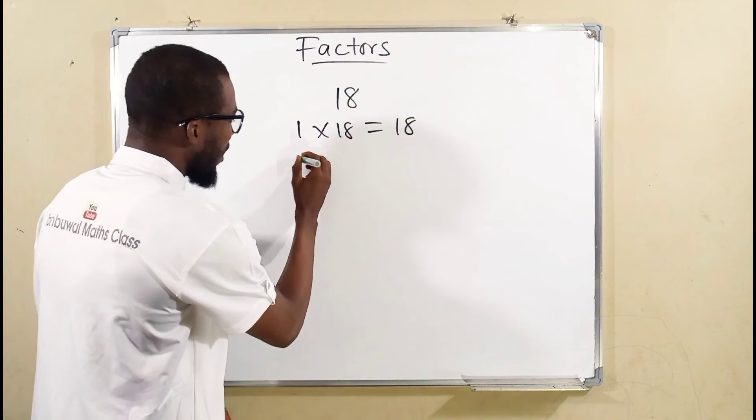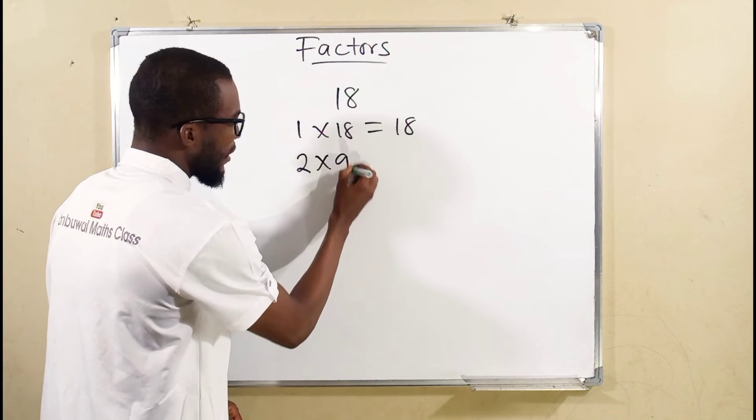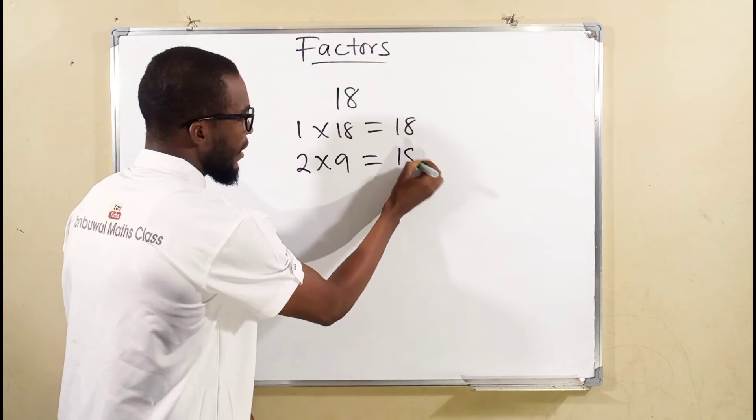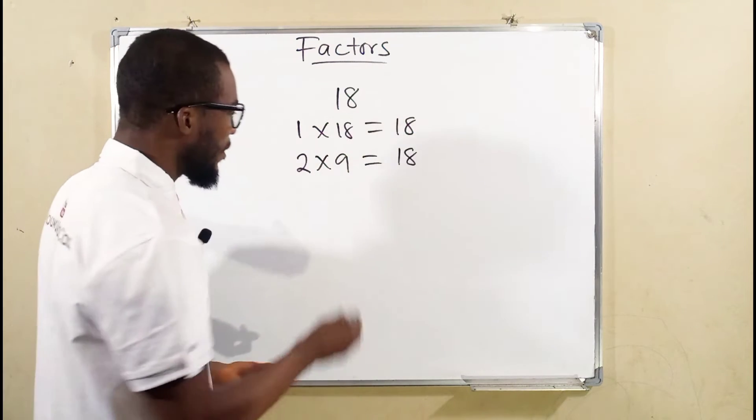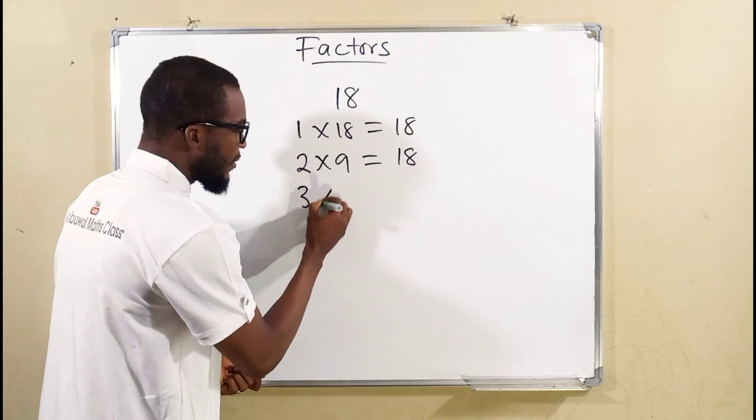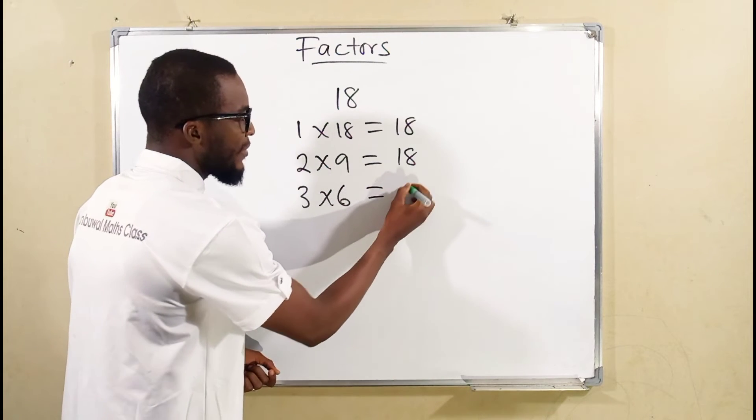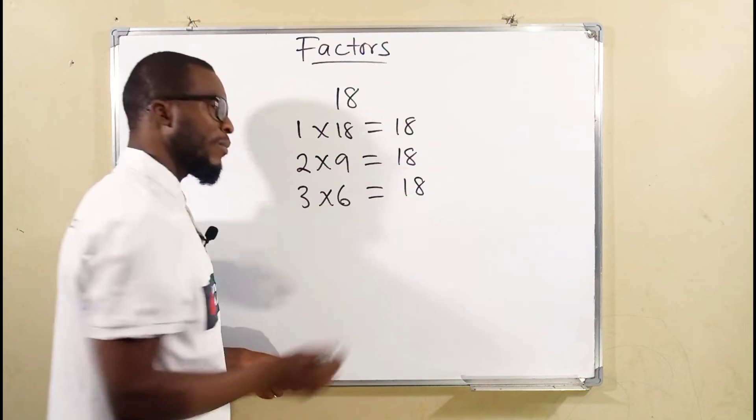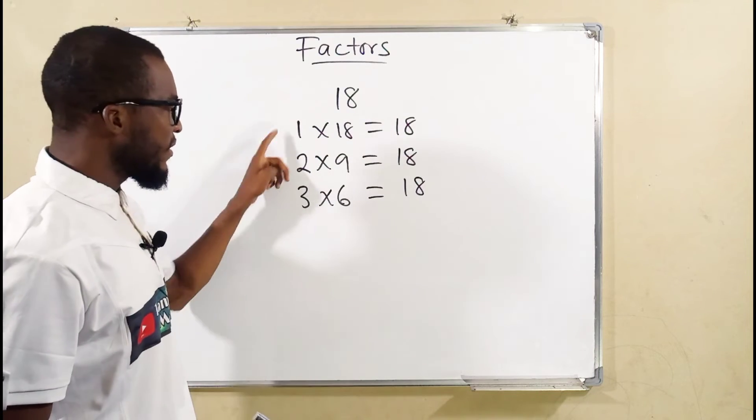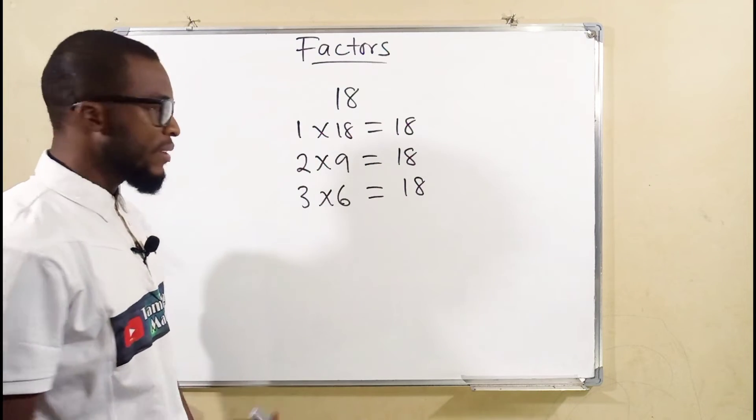As well, I know if I multiply 2 by 9, I shall obtain 18. Likewise, if I multiply 3 by 6, I shall obtain 18. All these 6 numbers are factors of 18.